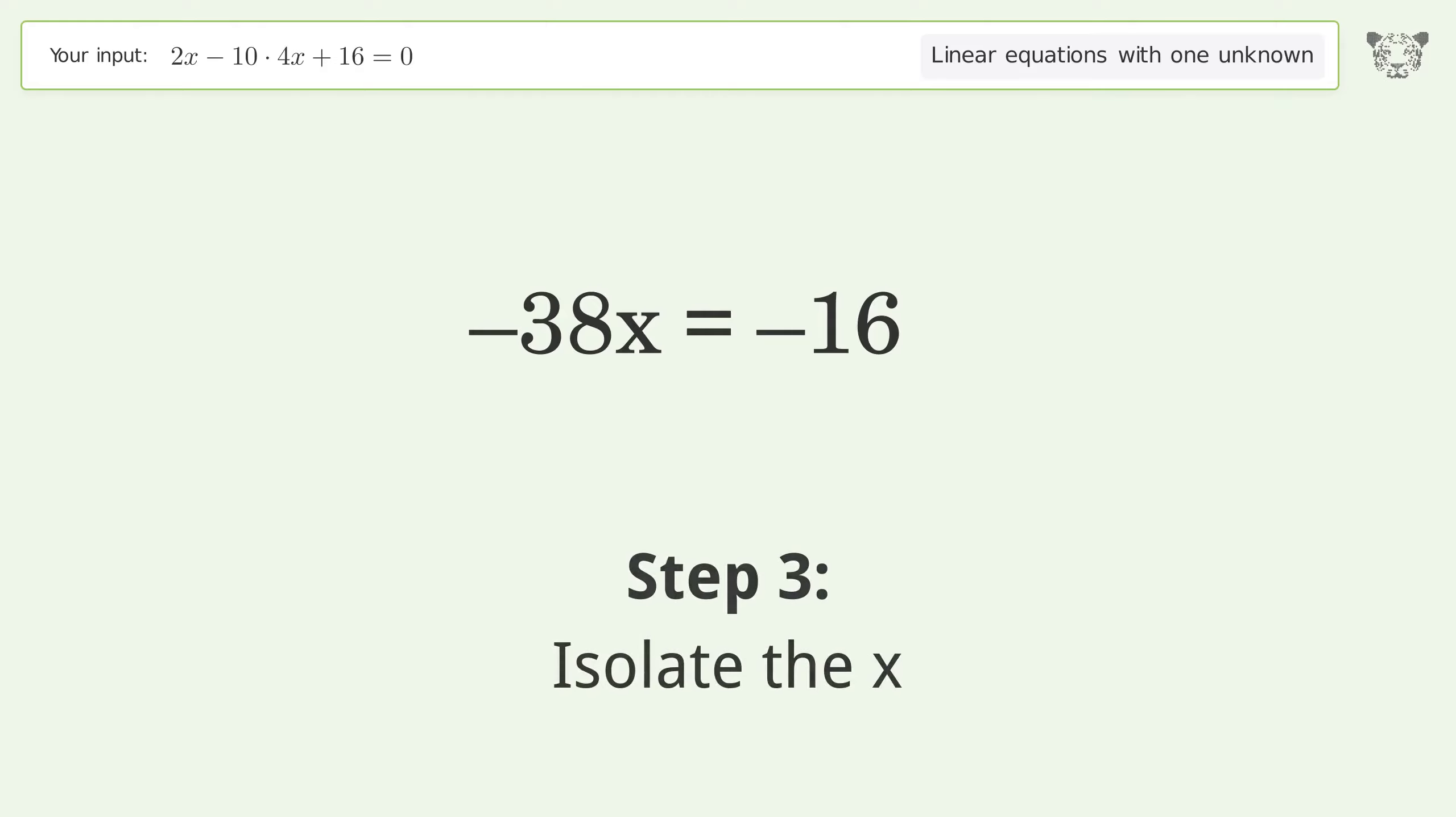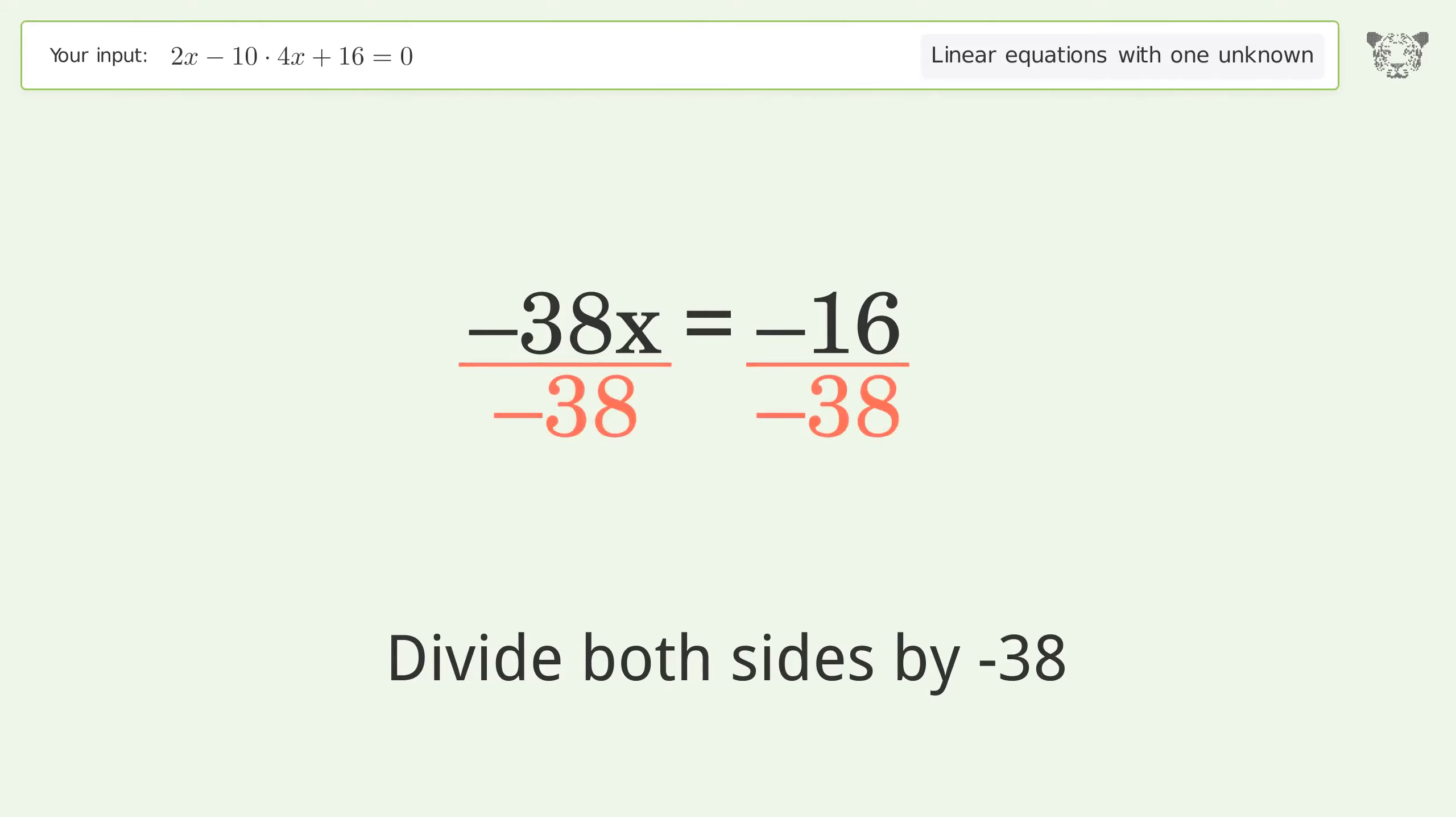Isolate the x. Divide both sides by negative 38. Cancel out the negatives.